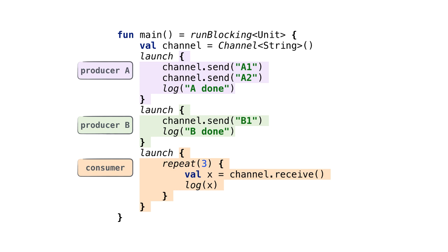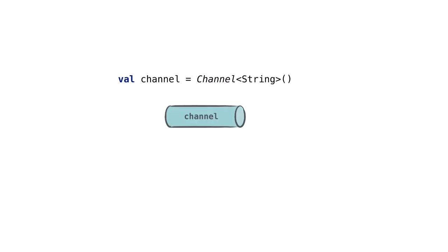What happens here? We create a channel, two producers that send values to this channel, and one consumer that receives values from this channel. We create a channel of strings — we can send and receive string values to and from it.